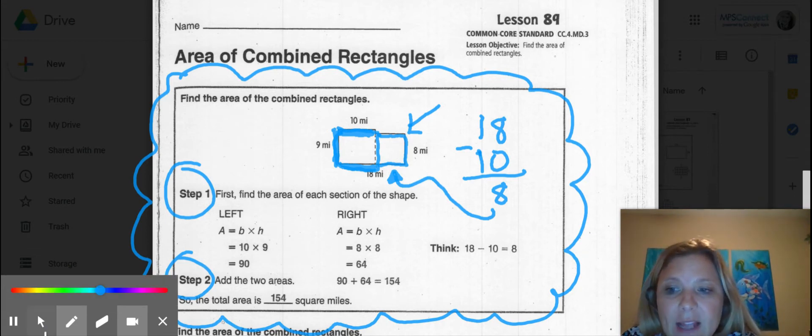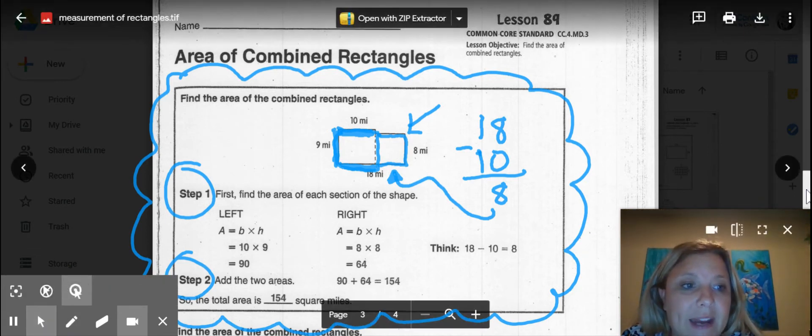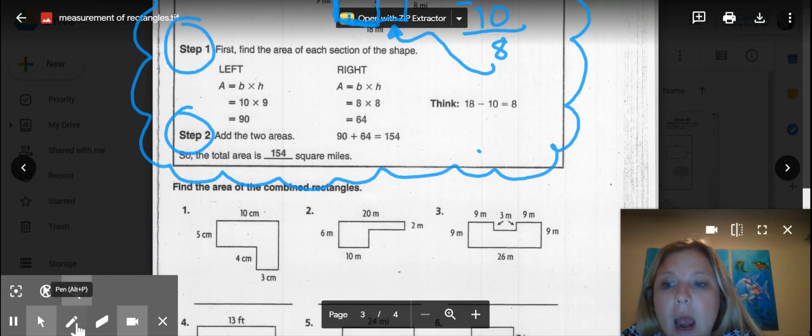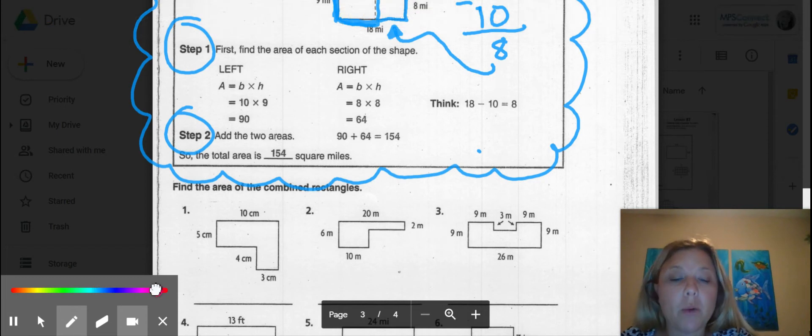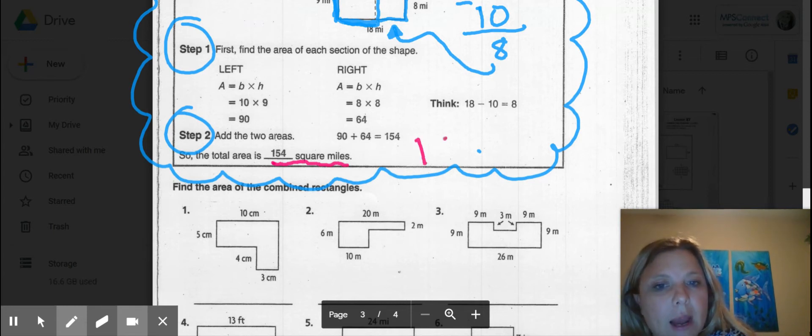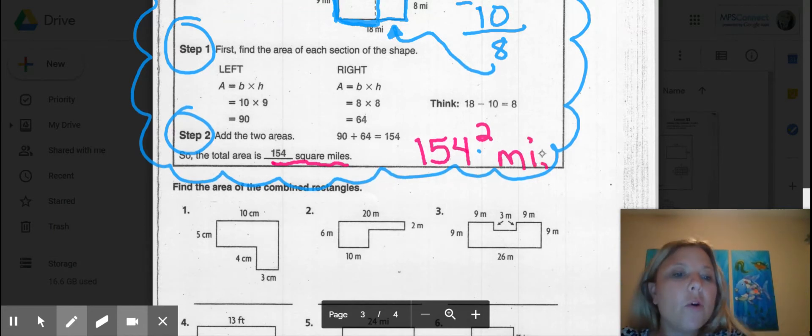But you're not done yet. As soon as you figure out the answer, please, please, please, when you write down your answer, do not forget your label. Now, remember your label can be written two different ways. You can write your label 154 square miles, or you can write 154 mi² . So both ways to write it, we will accept either one.